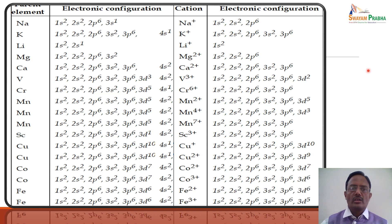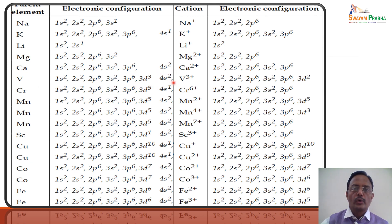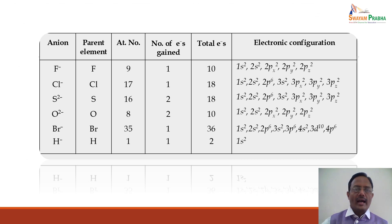For electronic configurations of cations, electrons are removed from the outermost shell first. For example, Na (1s² 2s² 2p⁶ 3s¹) loses the 3s¹ electron to give Na⁺ (1s² 2s² 2p⁶). For d-block elements like calcium or iron, electrons are removed from the outermost shell (4s) before 3d — electrons are filled in 3d after 4s but removed from 4s first. For anions, the electronic configuration of the atom is written and then the extra electron is added to the outermost shell.